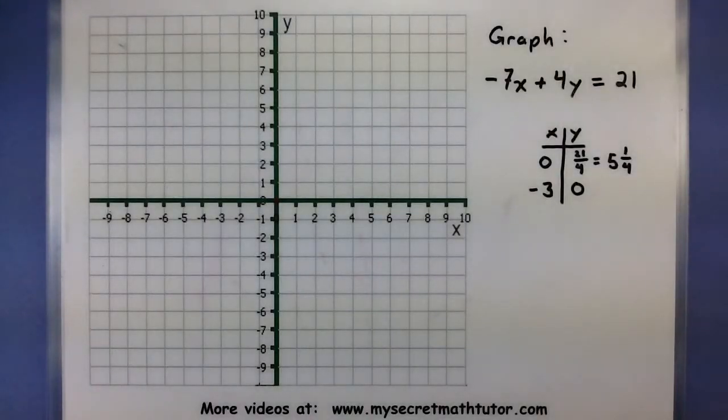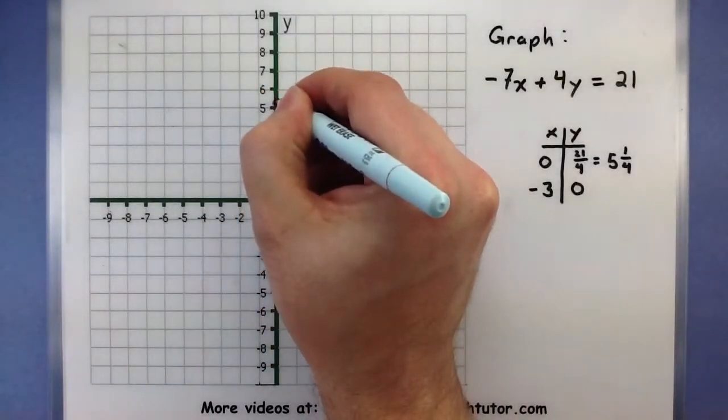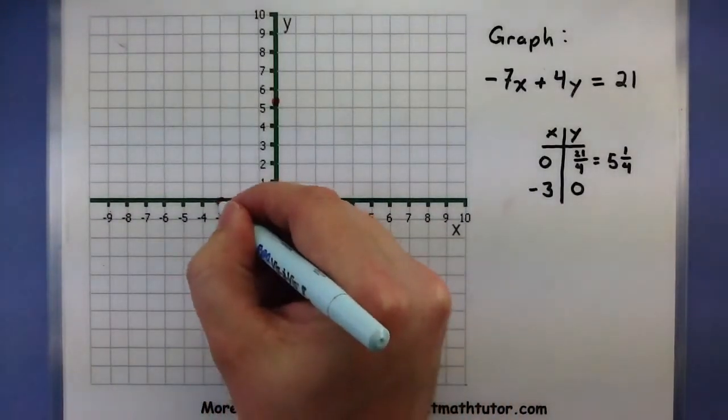Alright, now that we have our two points, let's put them on the graph. See what this line looks like. So I have 0, 5 and 1 quarter, negative 3, and 0.